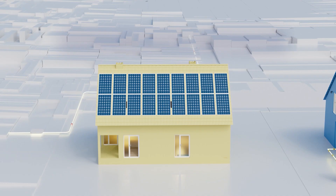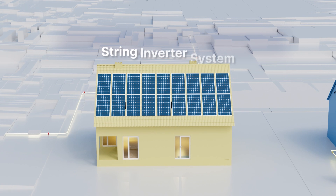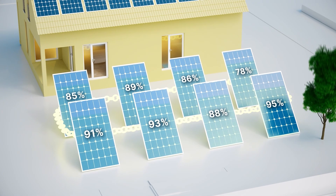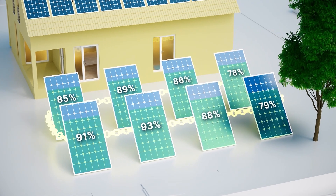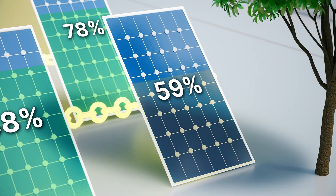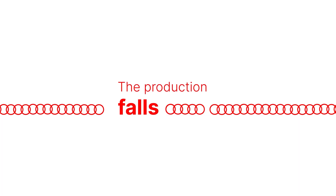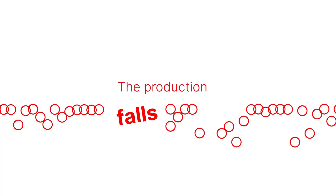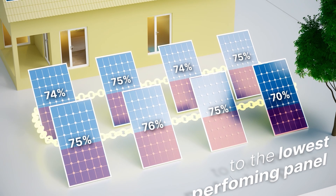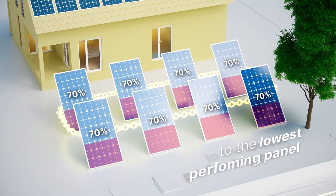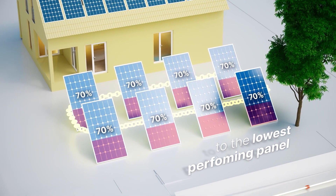First up, the string inverter system where all the panels are connected in a string, like a chain. If one panel underperforms due to shading or debris on the panels, the whole string's performance falls to the lowest performing panel level, losing energy and affecting your savings.